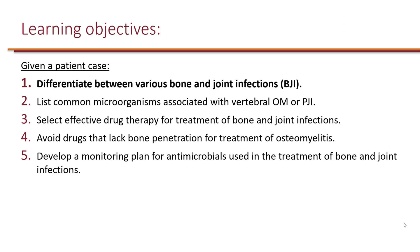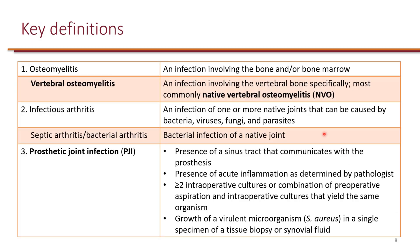The first learning objective is, given a patient case, differentiate between various bone and joint infections. Osteomyelitis is an infection involving any bone in the body or bone marrow. Osteomyelitis of the vertebra is specifically called vertebral osteomyelitis. Infectious arthritis is an infection of native joints caused by bacteria, viruses, fungi, or parasites. Septic arthritis or bacterial arthritis refers specifically to bacterial infection of a native joint. Prosthetic joint infection is the infection of a prosthetic joint, and its diagnosis depends on the presence of a sinus tract communicating with the prosthesis, presence of acute inflammation, and at least two intraoperative cultures — or a combination of preoperative aspiration and intraoperative cultures — yielding the same organism.